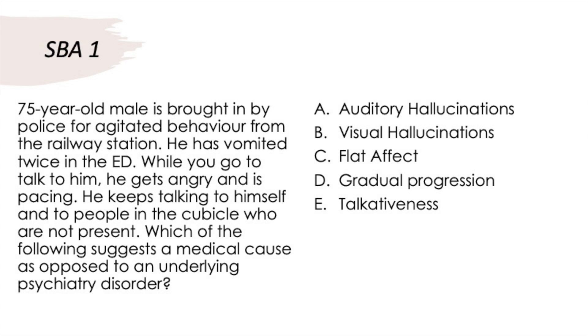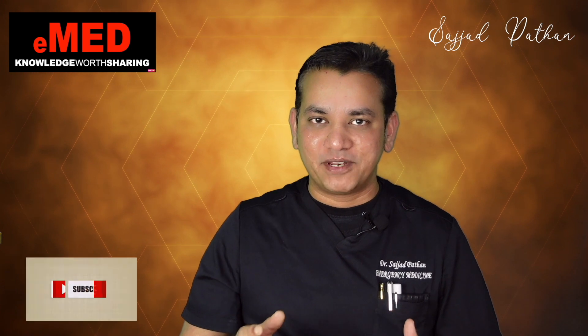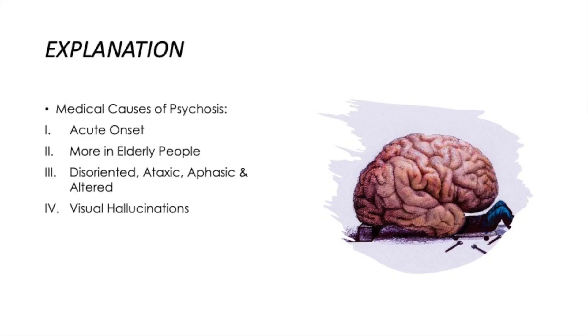With this question we are highlighting the differences between organic versus functional disorders, and laying the foundation to understand delirium versus dementia. Features of medical causes of psychosis include: acute onset with rapid progression, common in the elderly, patients are disoriented, ataxic, aphasic, and have altered visual hallucinations — not auditory. It is visual.